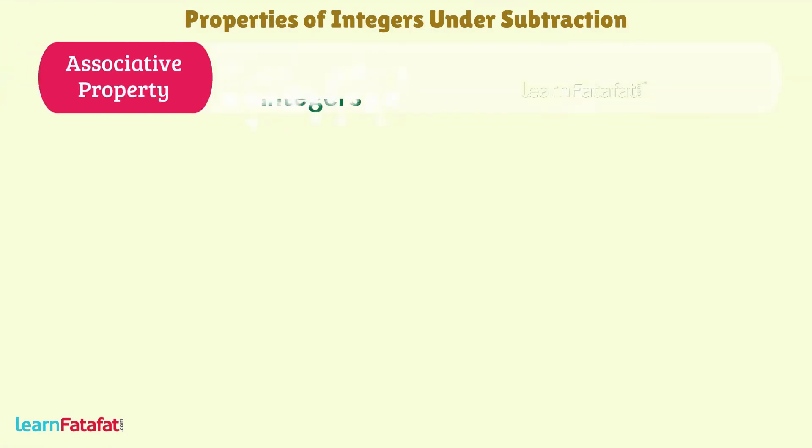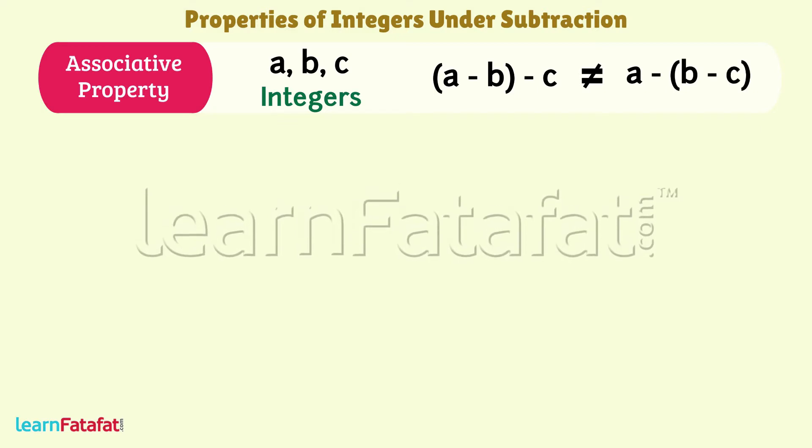Associative property: Integers a, b, and c cannot be grouped in any way. a minus b minus c is not equal to a minus b minus c. Order of subtraction must be followed in subtraction.